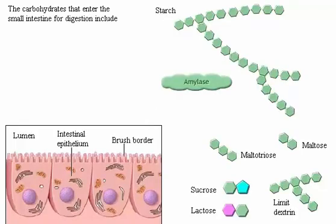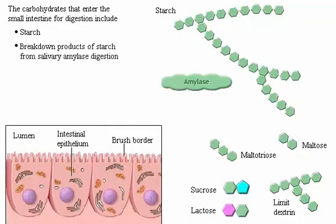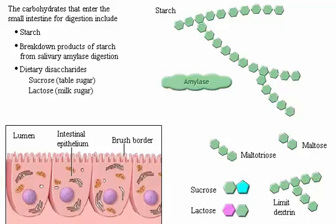The carbohydrates that enter the small intestine for digestion include starch, its breakdown products from salivary amylase digestion, and the dietary disaccharides: sucrose (table sugar), lactose (milk sugar), and maltose (grain sugar).